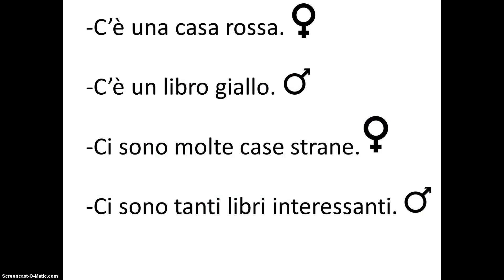Here are some other examples: c'è una casa rossa, c'è un libro giallo, ci sono molte case strane, ci sono tanti libri interessanti. Notice that the article, noun, and adjective all agree in number and gender. For example, una — feminine singular article — casa — feminine singular noun — rossa. And the same goes for all examples.